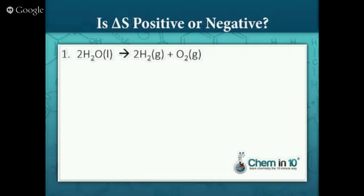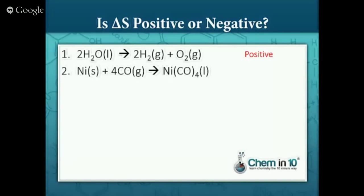Let's look at some examples, remembering to look at states of matter and number of particles. Here we have two molecules of water breaking up into two molecules of hydrogen gas and one molecule of oxygen gas. We're going from liquid to gas and from two particles to three particles, so entropy is positive. Here we have one mole of nickel solid reacting with four moles of carbon monoxide gas to form one mole of nickel tetracarbonyl. We're going from five particles to one particle, so entropy is decreasing — negative.